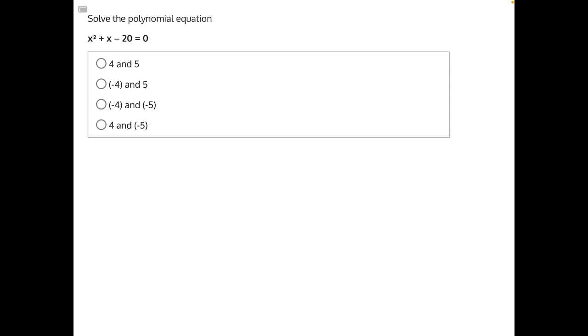To solve this polynomial equation we're going to need to factor, and to do that we'll have to find a pair of numbers that add together to give us our B value, which is equal to 1, and multiply together to give us our A times C.